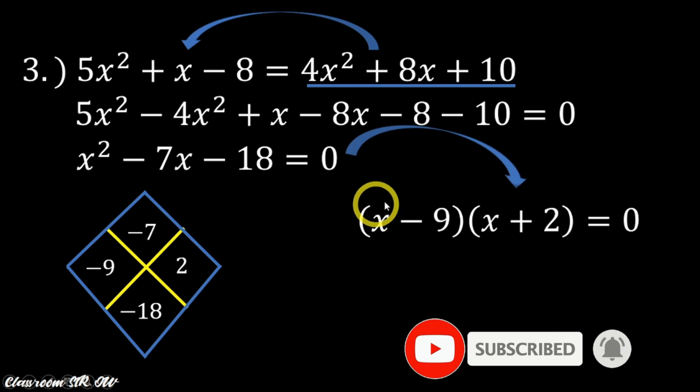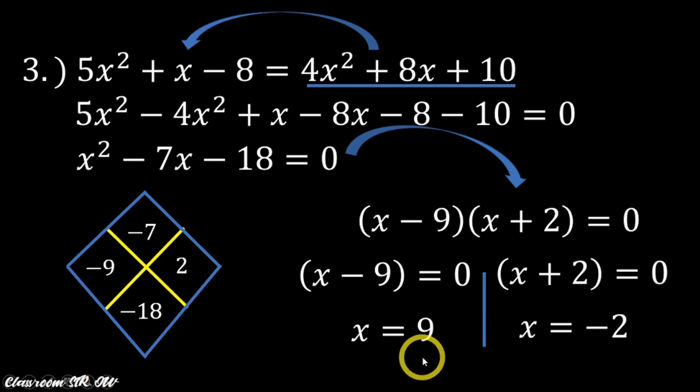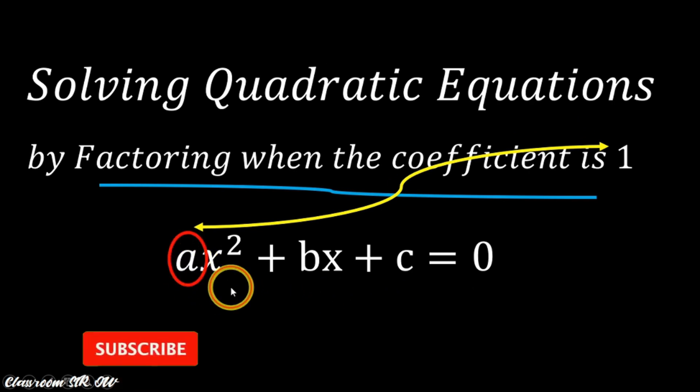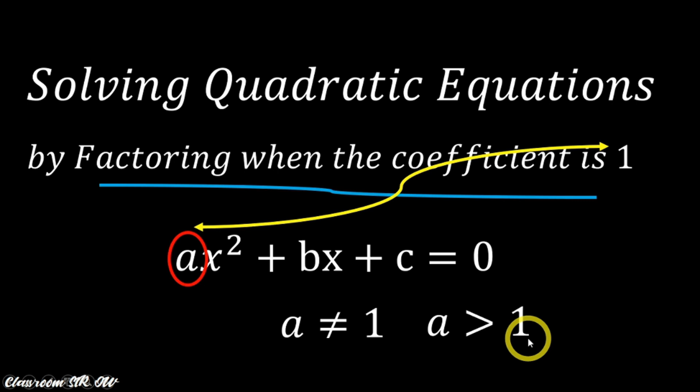So our factor now is x - 9 and x + 2. So following the sign already written in our diamond method, equating them both to 0 and transposing -9 and positive 2 to the other side, that gives us x = 9 and x = -2. So at this point, you will be asking me, what if the coefficient a is no longer equal to 1 and a is already greater than 1, example 2 or 3 and so on and so forth? We will answer the question in my next video.